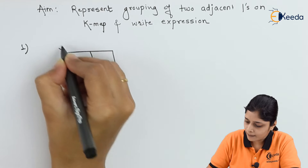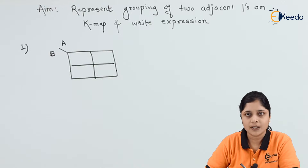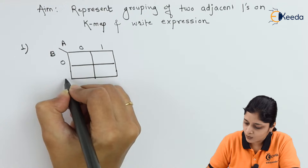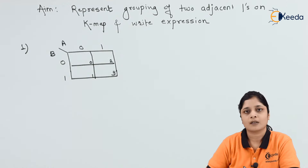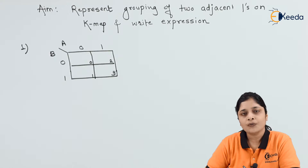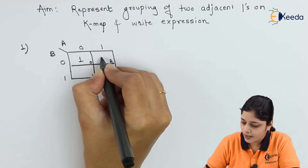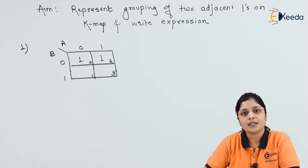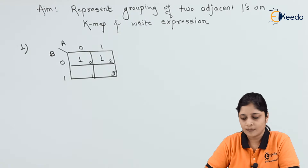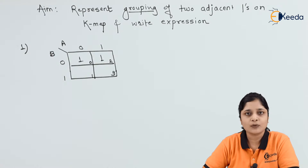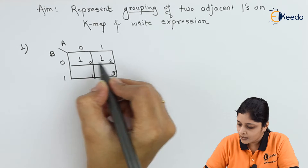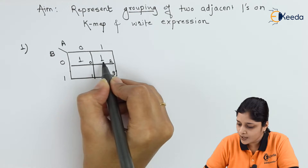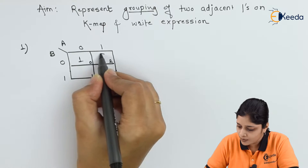Let's start with the first example: a two-variable K-map with variables A and B. The boxes are represented as zero, one, two, and three. The given K-map has ones placed, and the next step is to get the final answer using K-map rules. Here, this one and this one are adjacent to each other, so we will make one group.